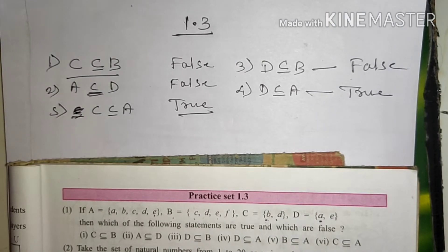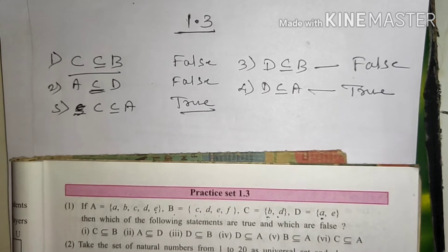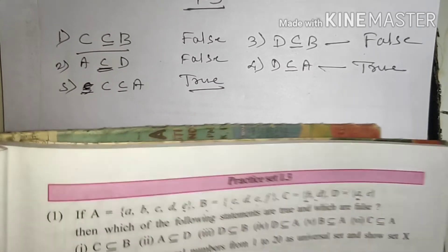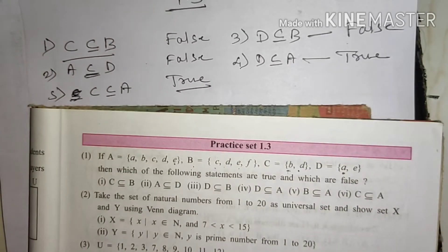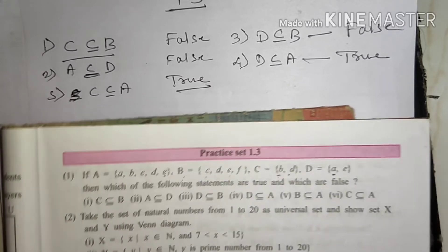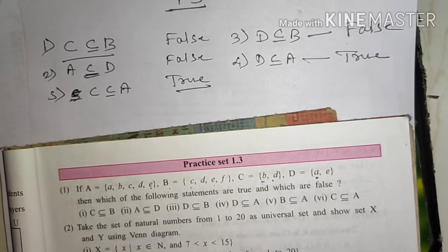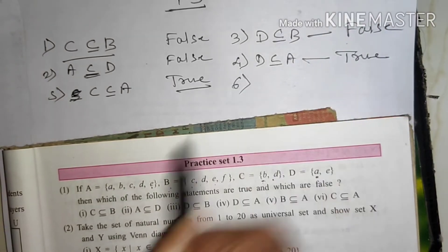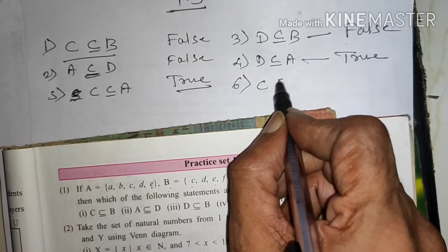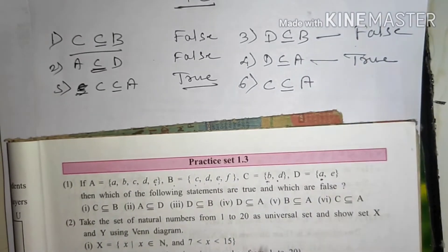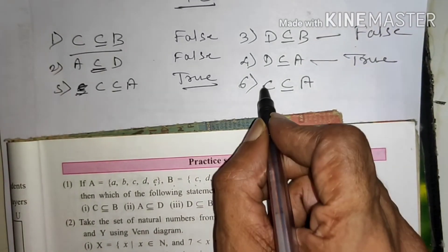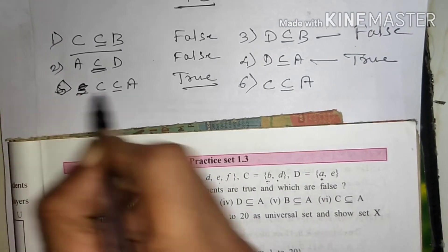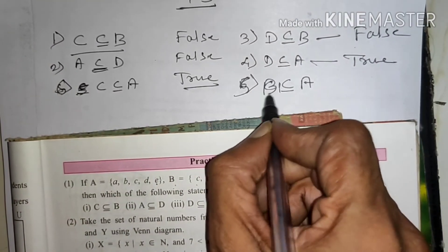Now next, second question. Let us read. The sixth one, S C subset of, sorry B, it is number six, and fifth wala jo hai is B subset of A.